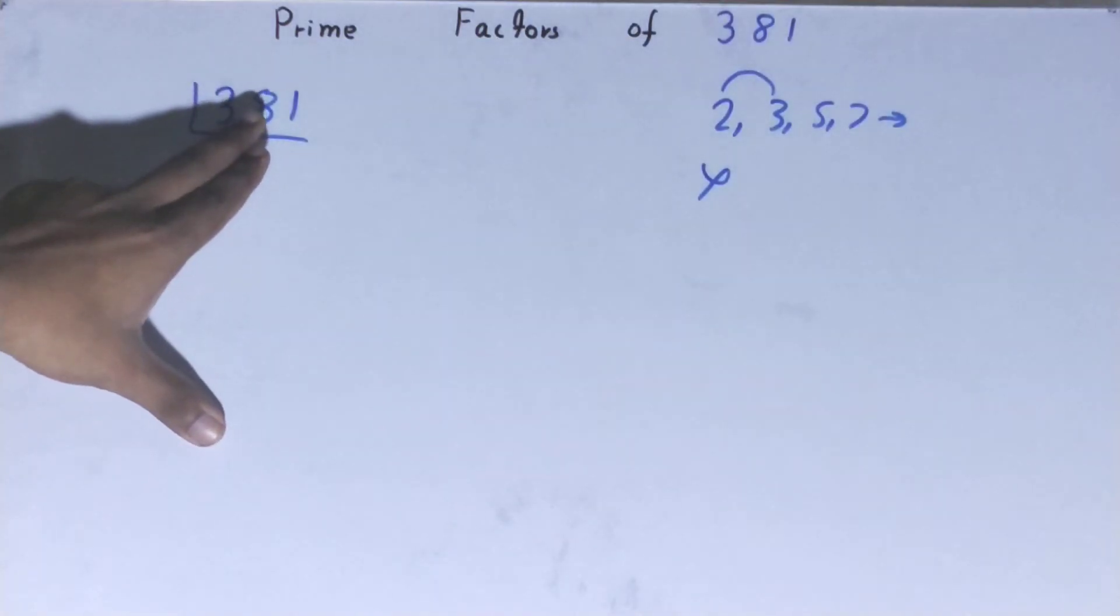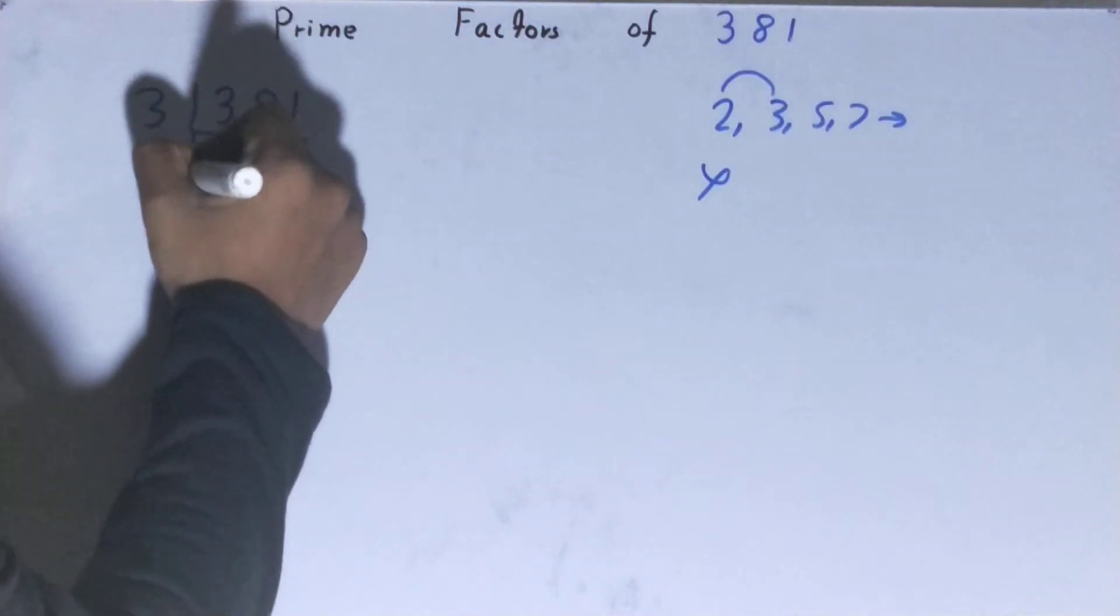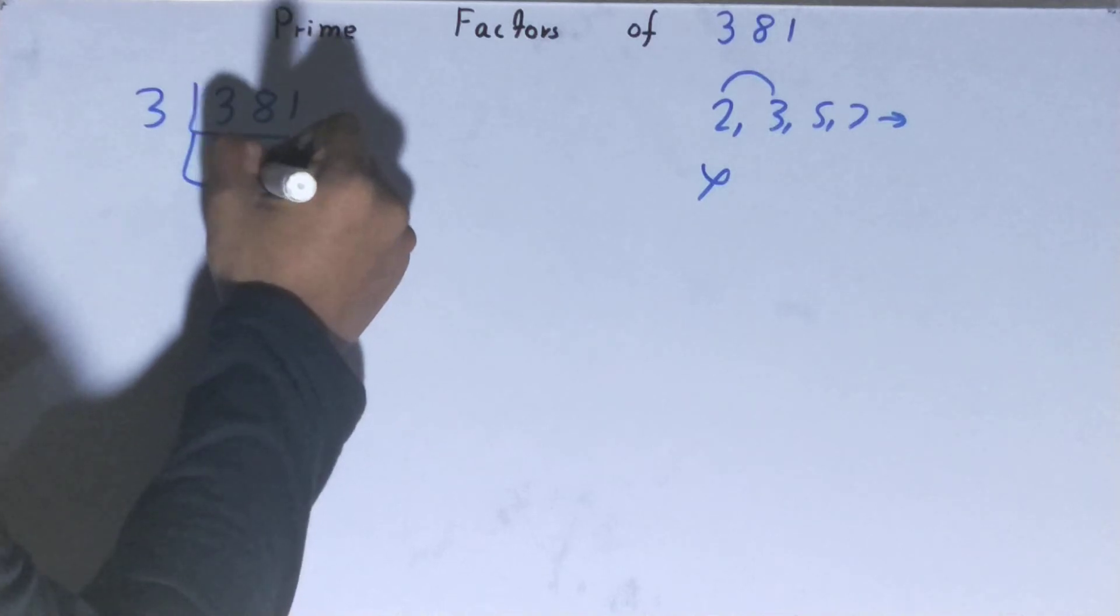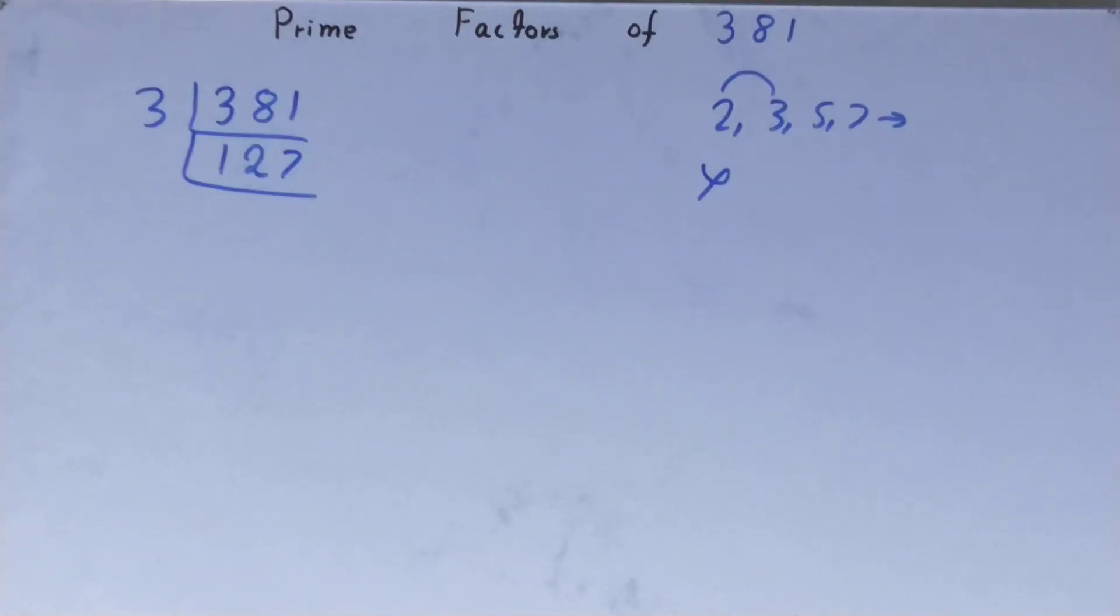3 times 127 is 381. Yes, it is divisible by 3. So divide it. 3 times 127 is 381. You will be left with 127.